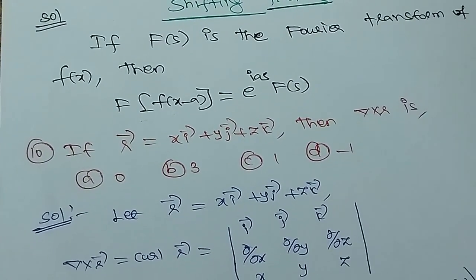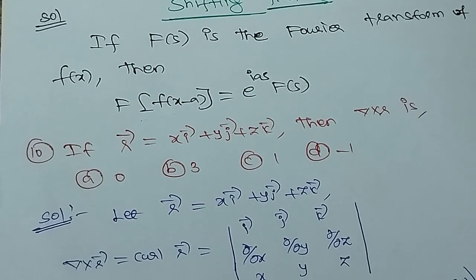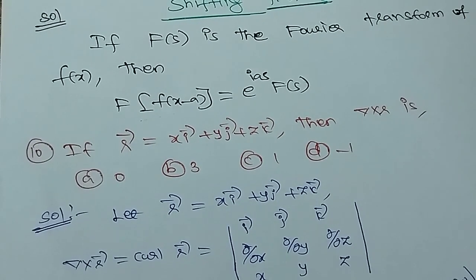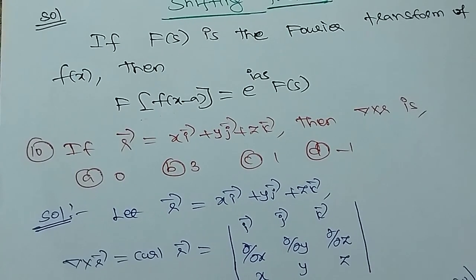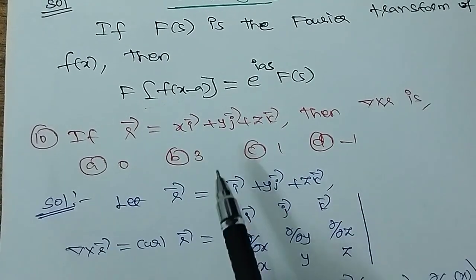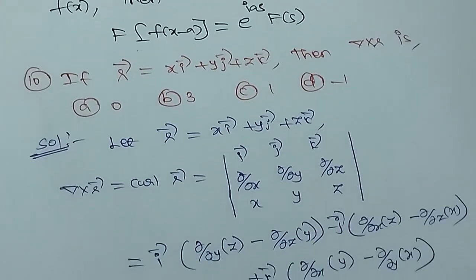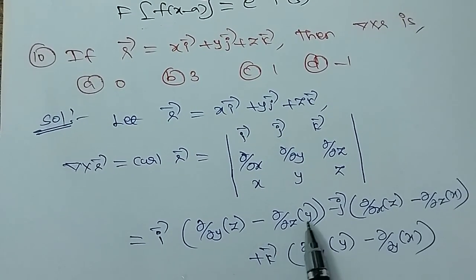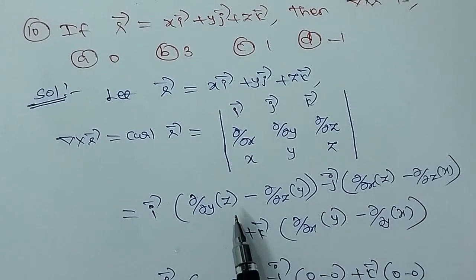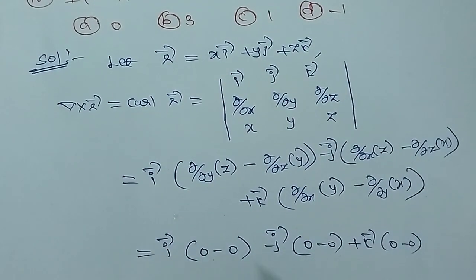Question 9 is based on vector differentiation — the curl vector. If the position vector r equals xi plus yj plus zk, then del cross r (curl r) equals the determinant with i, j, k in the first row; ∂/∂x, ∂/∂y, ∂/∂z in the second row; and x, y, z in the third row. Evaluating this determinant, each component gives zero. Therefore, curl r equals 0. Option A is the correct answer.